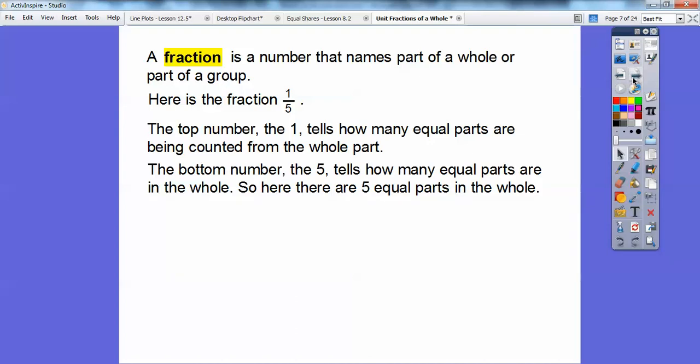And then the bottom number, 5 here, tells us how many equal parts are in the whole. So, here we have 1 out of 5 different parts right here. There are 5 equal parts in this whole, and the 1 just tells us how many we have.